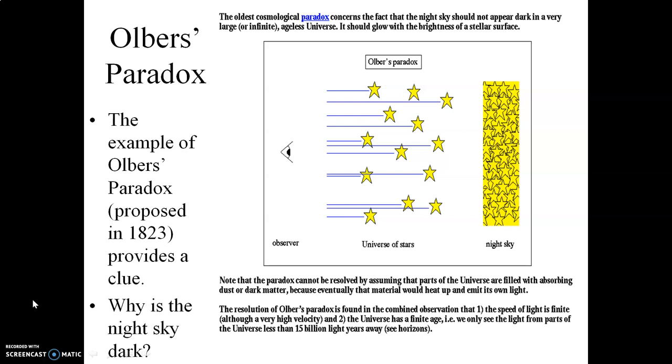For example, let's say that the universe is infinitely large. If the universe is infinitely large, that would mean that if you look in any direction, eventually your line of sight would fall on the surface of a star. And if the universe is infinitely large and correspondingly infinitely old, this would mean that eventually light from that star would reach your eye.